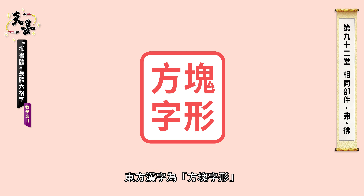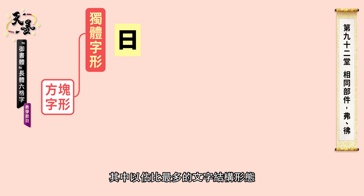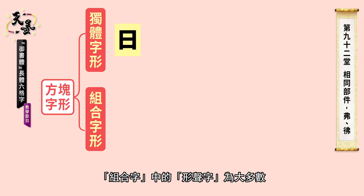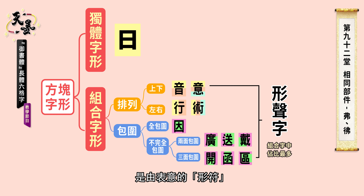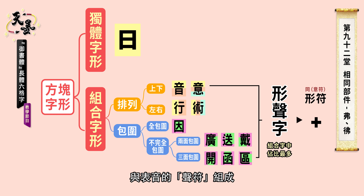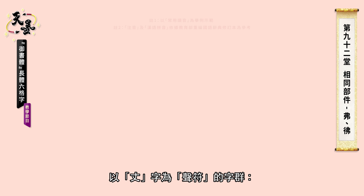Chinese characters are square words. Most of them are pictophanetics, which are combining structures. The shape indicates the meaning. The sound is pronunciation.